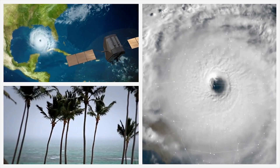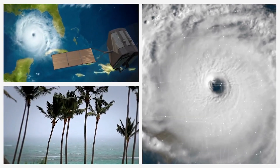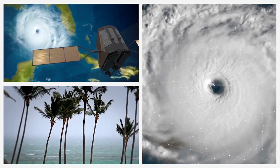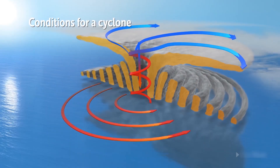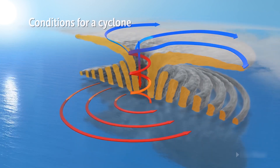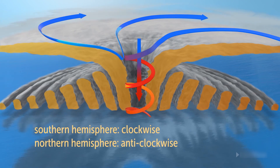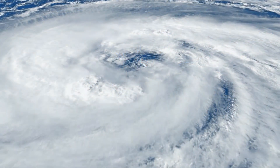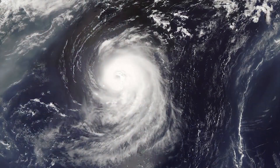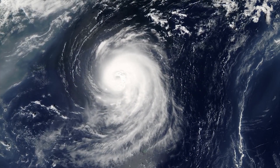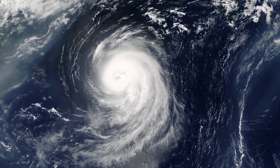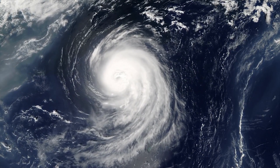Tropical cyclones are formed only over warm ocean water near the equator. When warm, moist air over the ocean rises upward from near the surface, a cyclone is formed. When the air rises up and away from the ocean surface, it creates an area of low air pressure below. This causes the air from surrounding areas with higher pressure to move toward the low pressure area, which further leads to warming up of the air and causes it to rise above. As the warm, moist air rises and cools, the water in the air forms clouds. The complete system of clouds and wind spins and grows, drawing on the ocean's heat and water evaporating from the ocean surface.